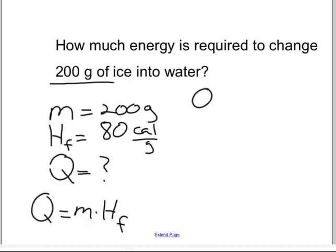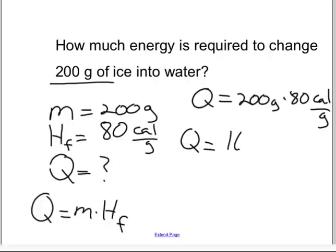Then we plug in the numbers, so Q equals, super easy, take 200 grams times 80 calories per gram. Q equals, multiply it out, which is going to be 16,000. And our unit label is going to be what? If you take a look here, as we always write down the unit labels, we plug in the numbers, we have grams above, grams below, we cancel that out. So what we have left is calories. So the answer is 16,000 calories.